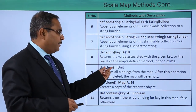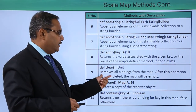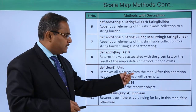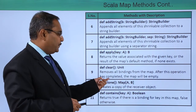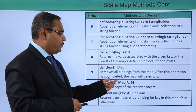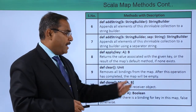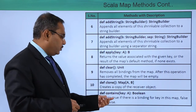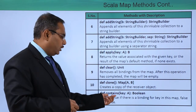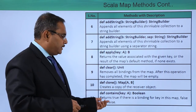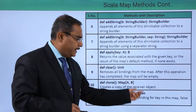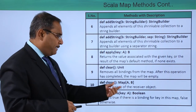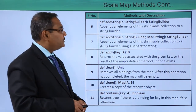We are having apply and clear. Clear removes all bindings from the map, and after this operation has completed, the map will be empty. Next we are having clone. We are having contains, which returns true if there is a binding for the key in this map, and false otherwise.